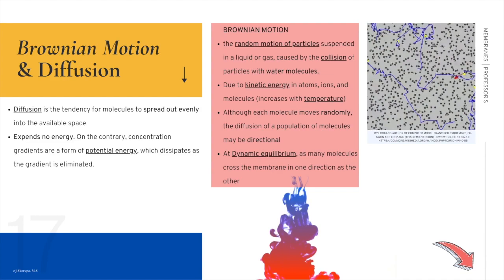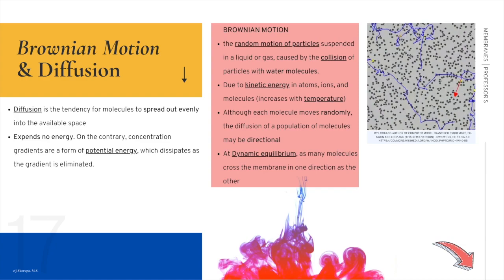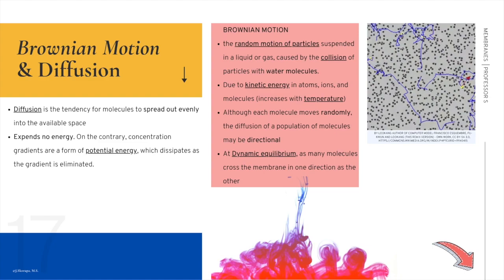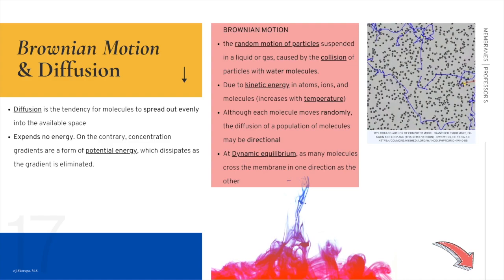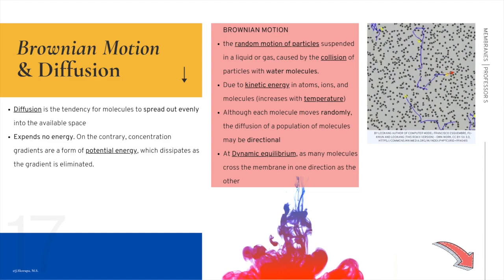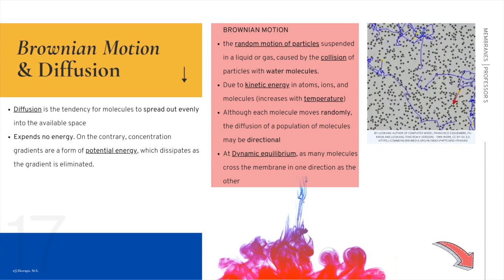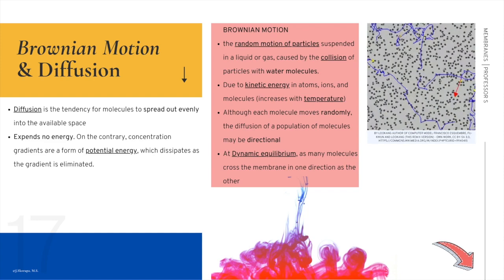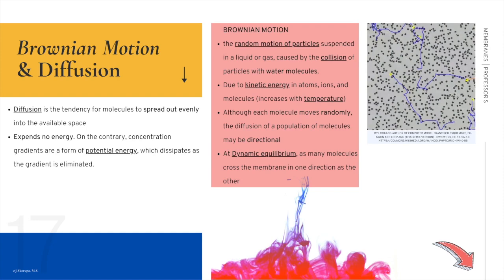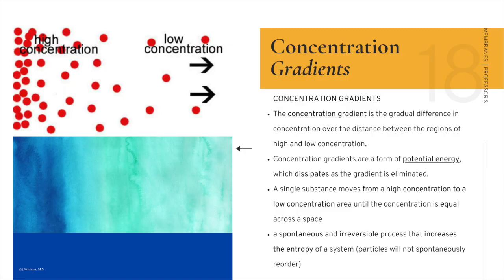This motion is called Brownian motion — the random motion of particles suspended in a liquid or gas caused by collision with water molecules. At the atomic level, molecules are vibrating and moving due to thermal and kinetic energy. Although each molecule moves randomly, diffusion of a population of molecules may be directional — movement tends to be away from where things are more concentrated. At dynamic equilibrium, just as many molecules are crossing the membrane in one direction as in the other.